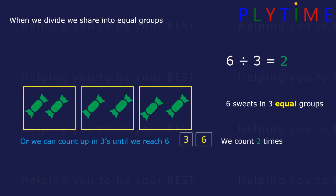We count two times. The answer is two, and we can check by doing the opposite. Two times three equals six. That's correct.